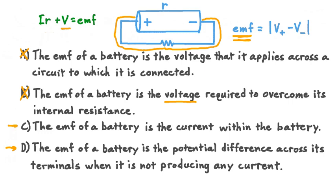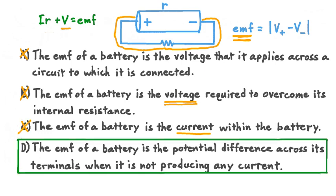This confirms our choice of option D: the EMF of a battery is the potential difference across its terminals when it is not producing any current. This agrees with our equation for EMF, because if we set the current I to be zero, then EMF equals V.